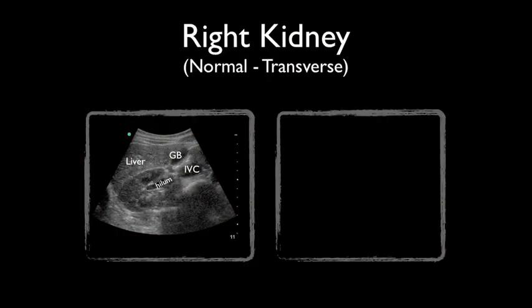The transverse view of the kidney appears C-shaped. The bright area around the kidney is Gerota's fascia and perinephric fat. These are normal findings.